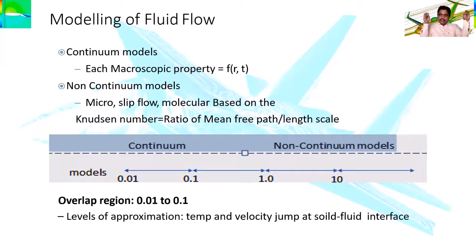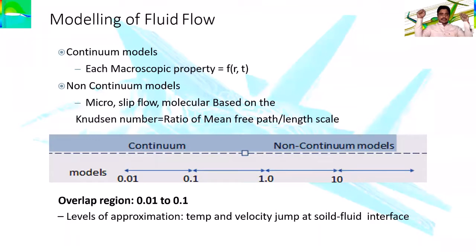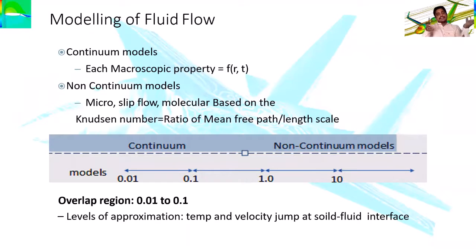Molecules are not stable — they are always moving and discontinuous in nature. The mean free path represents the average distance traveled between collisions. If the mean free path does not match the length scale, the average values are not close, and it is called a non-continuum model. For continuum models, the ratio of mean free path to length scale should be less than one; when it is greater than one, it is a non-continuum fluid model.